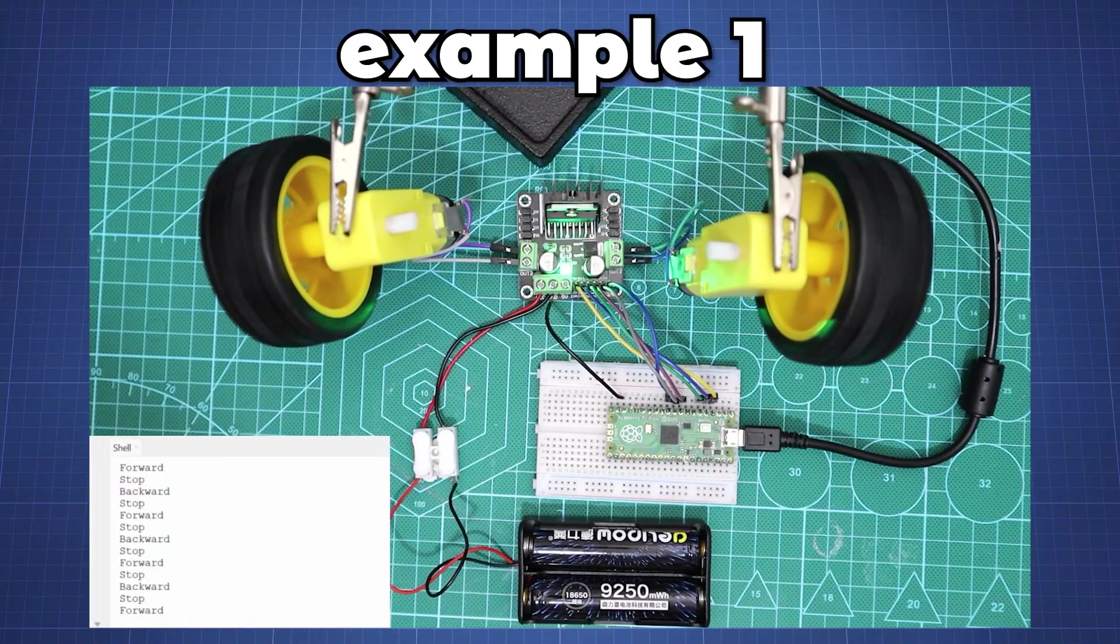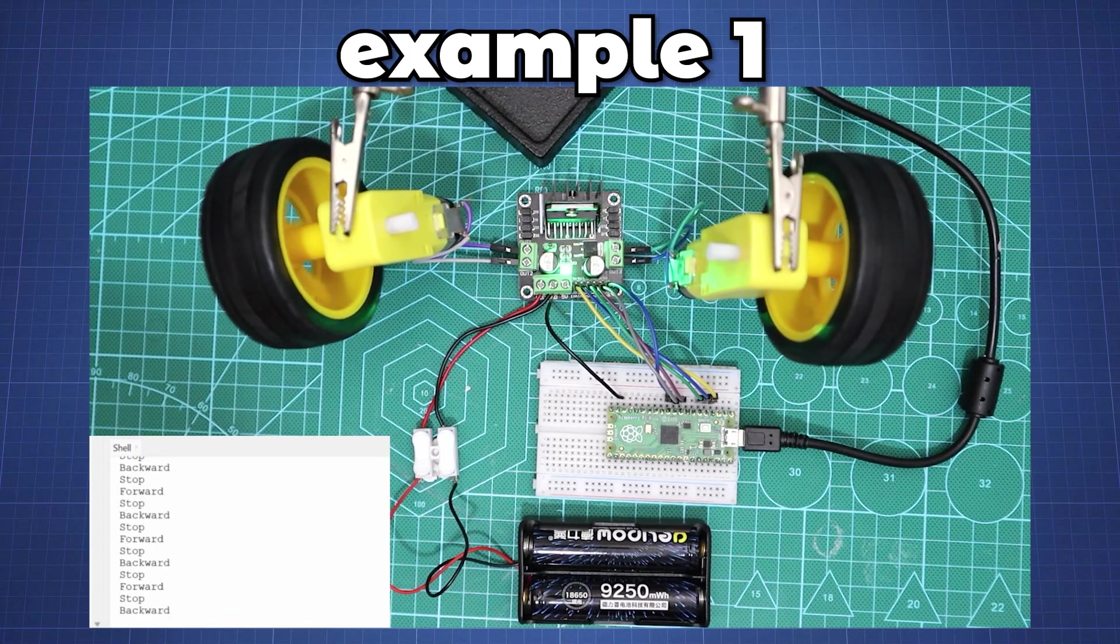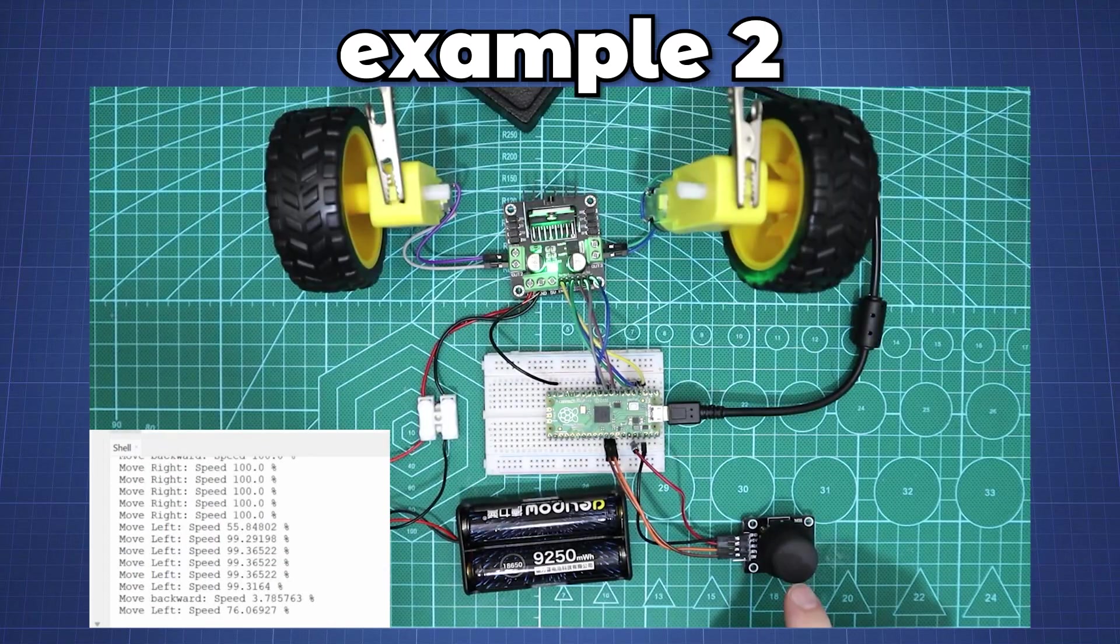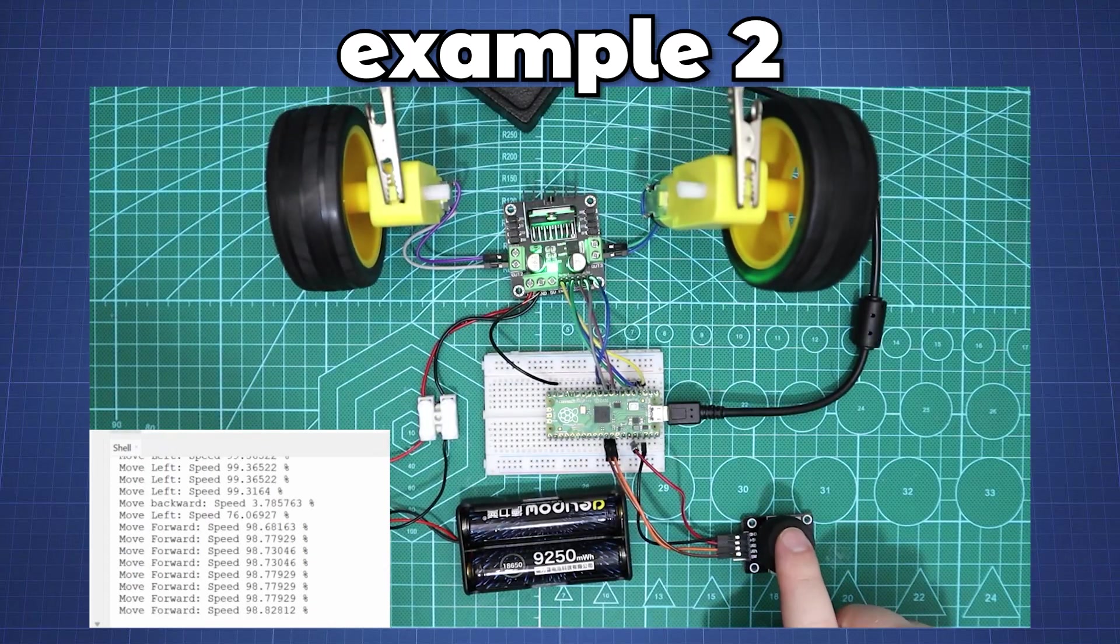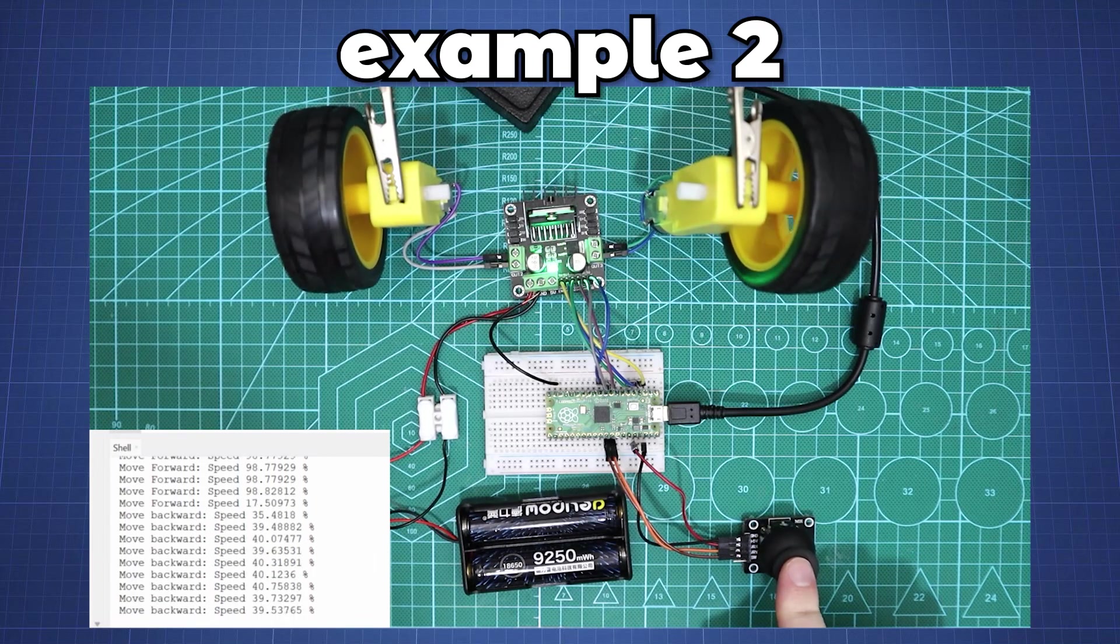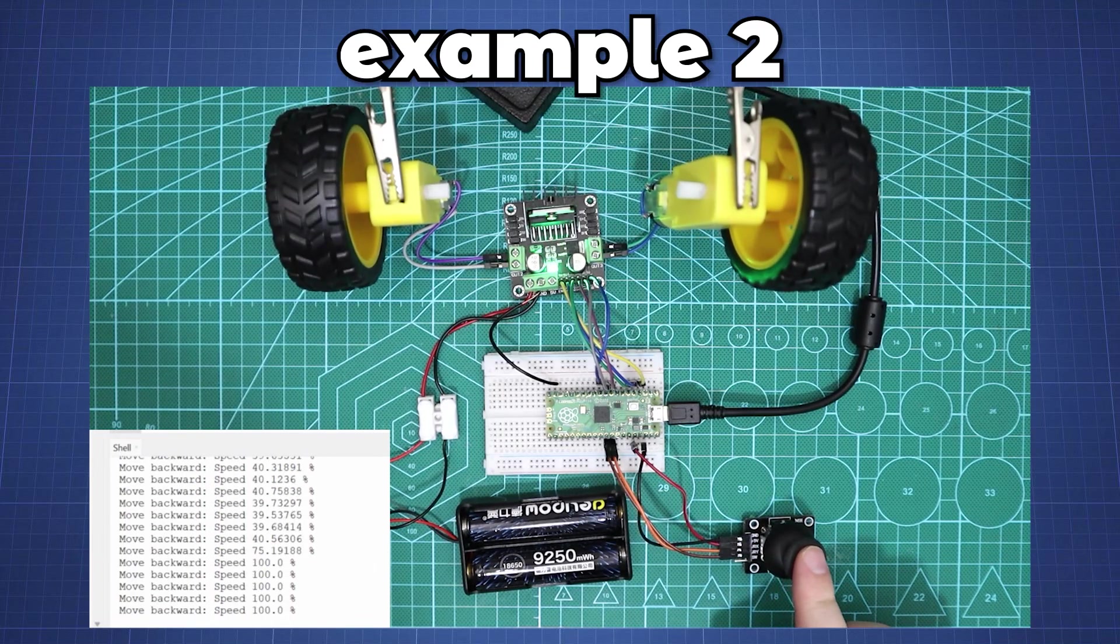In the first example we will let the motors turn full speed in either clockwise or anti-clockwise direction, and in example 2 see how we can use PWM to control the speed of the motors using this PlayStation 2 joystick.